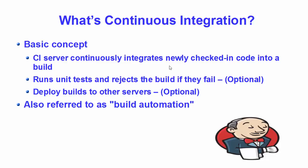In the second step of continuous integration, it runs unit tests and rejects the build if they fail. So a continuous integration system runs the unit tests, detects failures, and if a failure occurs during unit tests, integration tests, or any kind of test, it's going to reject that build and send the information to the developer or the maintainer of that code. If the build and tests are successful, the CI system will deploy your build to other servers.